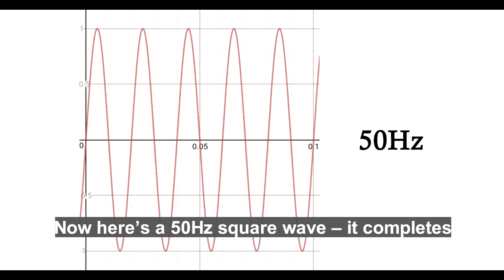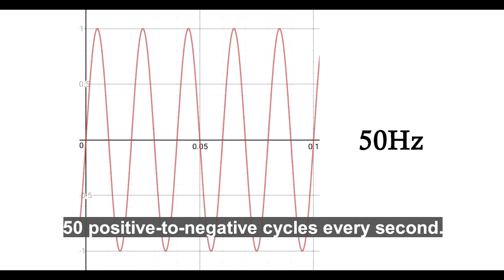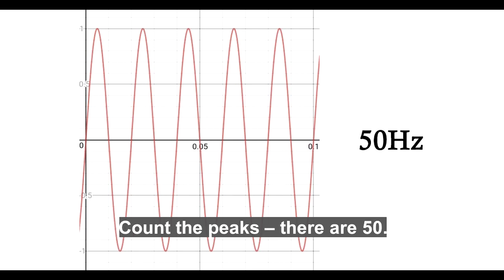Now here's a 50 Hertz square wave. It completes 50 positive to negative cycles every second. Count the peaks - there are 50.